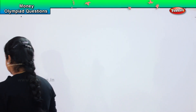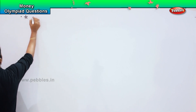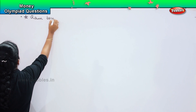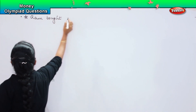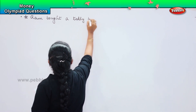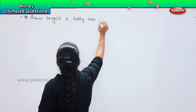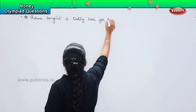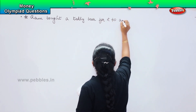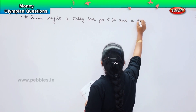Shall we do the next question? Here is your next question. Ram bought a teddy bear for rupees 40 and a pencil pouch.